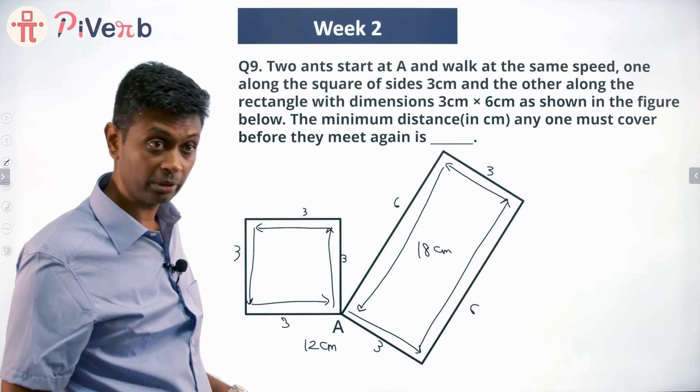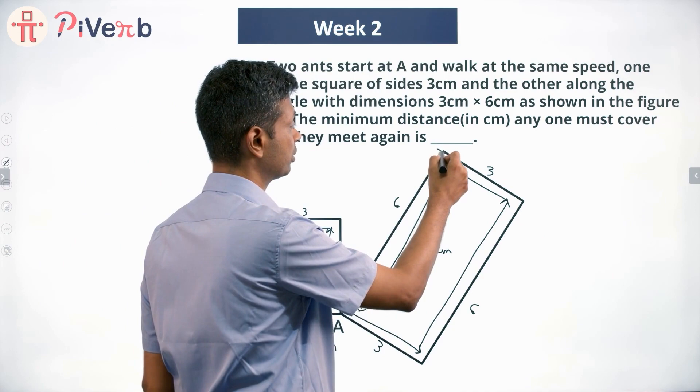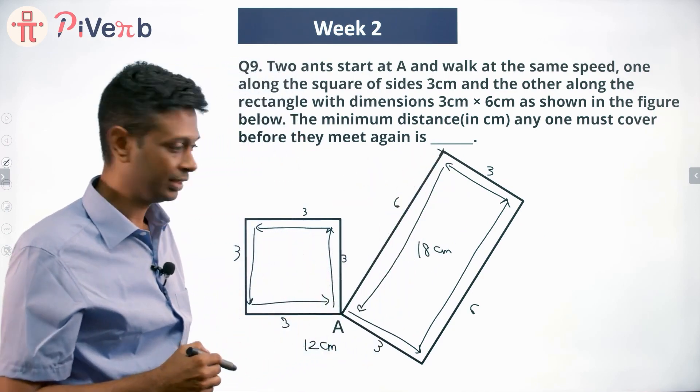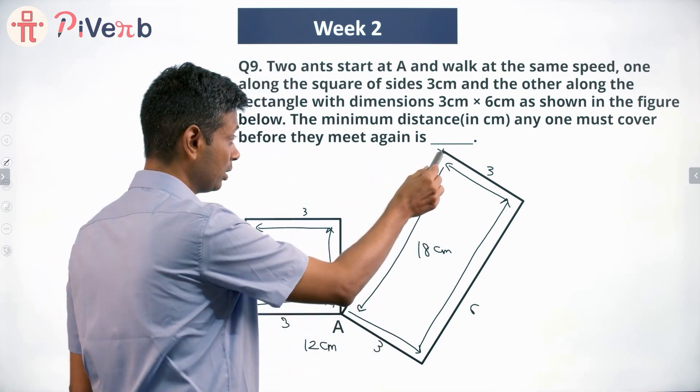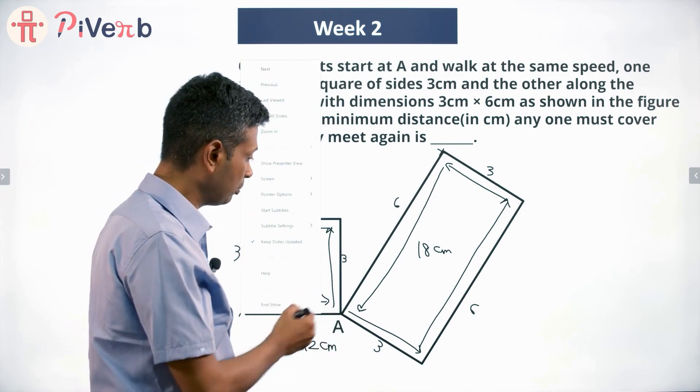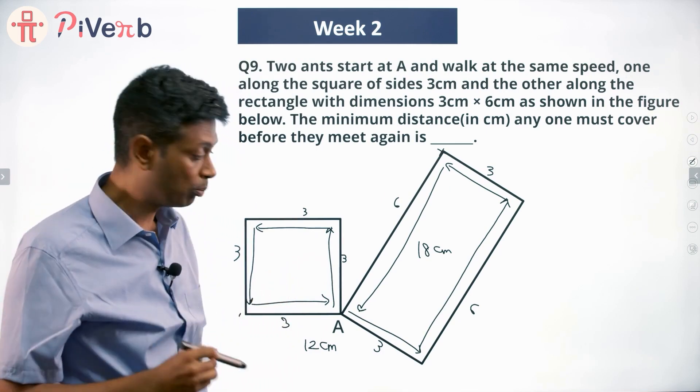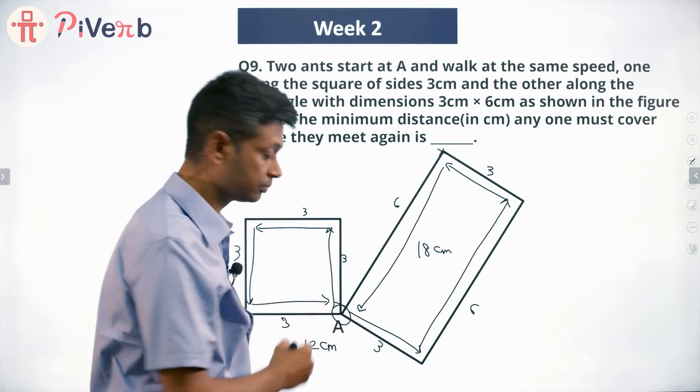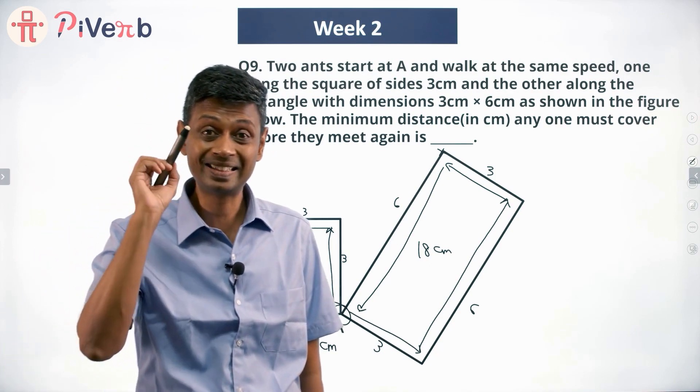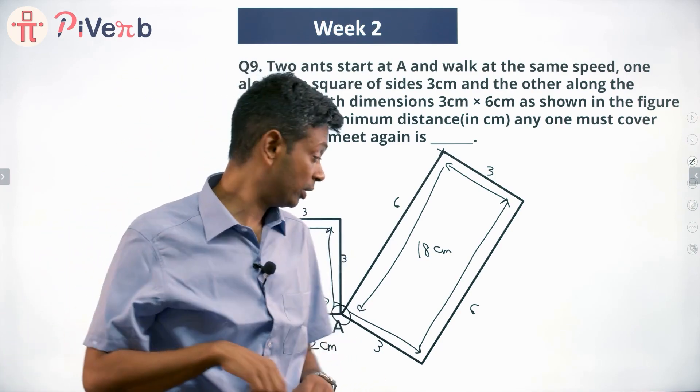So when this one does 12 centimeters, the second one would have done 12 centimeters and be only at this point. Then by the time the second ant comes here, the first ant would have gone till here. So they keep on traveling, but at some point of time both of them should be here. We want to think about that distance that each of them has to travel such that both of them happen to be at A.